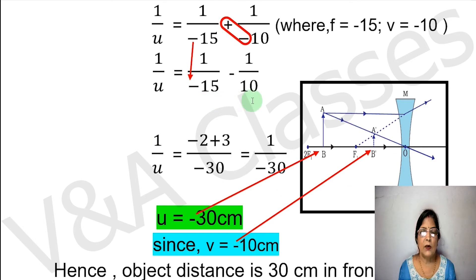Now we will take the LCM of minus 15 and 10, which will be minus 30, and we will solve this. So our next step is 1/u equals to minus 2 plus 3 upon minus 30.